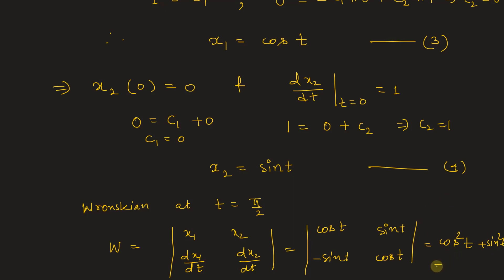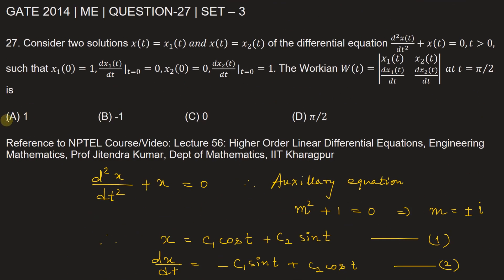Therefore, W = 1, because cos²(t) + sin²(t) = 1, no matter what the value of t is. So the correct option is option A. For more information, you can refer to the NPTEL course, lecture number 56, Higher Order Linear Differential Equations on Engineering Mathematics by Professor Jitendra Kumar of the Department of Mathematics at IIT Kharagpur.